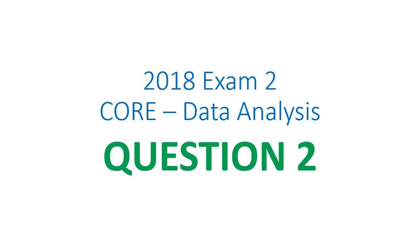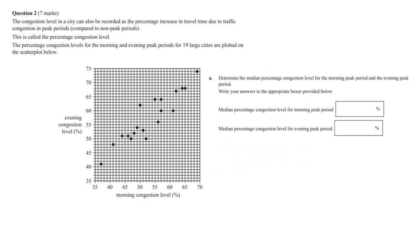2018 exam 2 core data analysis question 2. We've got to get the median percentage for the morning peak period and evening peak period, and then you just write the answers in the boxes. So that's for morning, that's for evening.